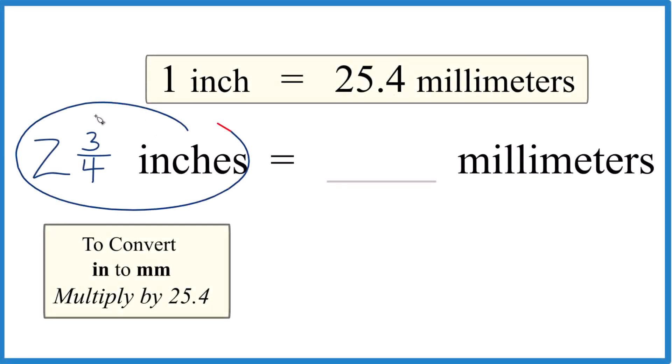Let's convert two and three-fourths inches to millimeters. So first off, let's just take three and divide it by four. That'll give us 0.75. So we're going to treat this as 2.75 inches. That's a lot easier to deal with. It's the same thing. This is a fraction. This is our decimal.